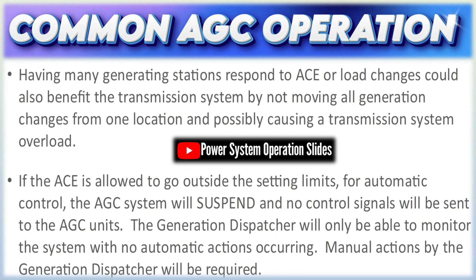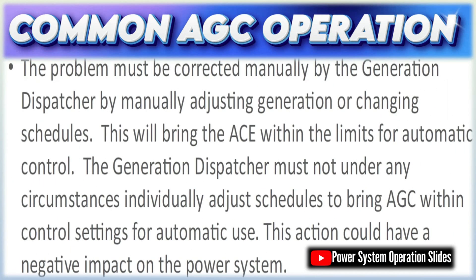When a control signal is received, individual generation units adjust their output via their turbine governors or inverter controllers. Each unit's inherent dynamics — including inertia, ramp rate capability, and droop characteristics — play a role in how quickly and accurately it can respond. The aggregate response of all controlled units produces a smooth modification of the total power output, helping to promptly correct any imbalance or restore the system frequency.